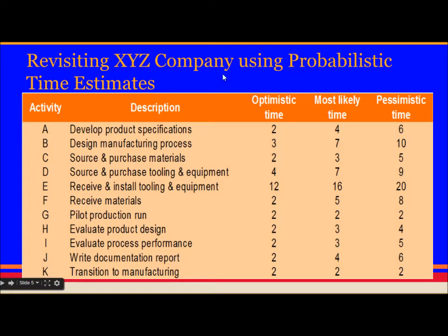This is another chart which will give us the optimistic time, most likely time and pessimistic time to complete certain activity. For activity A, the optimistic time estimate is 2 weeks, most likely is 4 weeks and pessimistic is 6 weeks. This chart will be given to you.